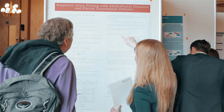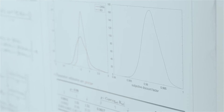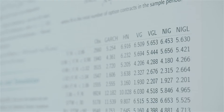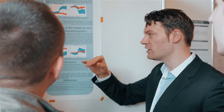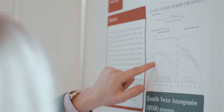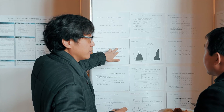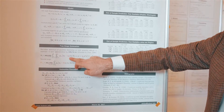In financial econometrics, statistical methods are used to model financial data and to predict financial variables. The field is therefore on the interface between statistics, econometrics, mathematical finance, and financial economics.